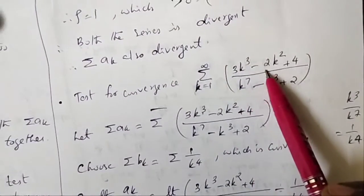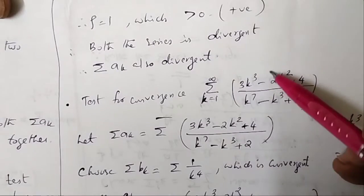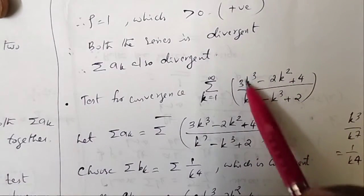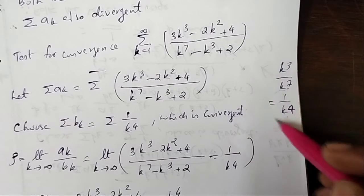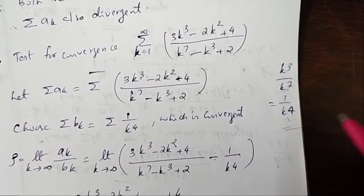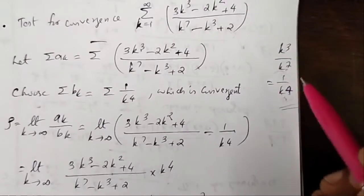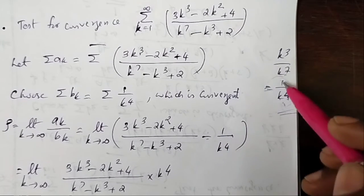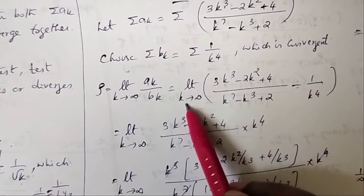Next: σ from k=1 to infinity of (3k³ - 2k² + 4)/(k⁷ - k³ + 2). Find the maximum power of k in numerator and denominator: numerator is k³, denominator is k⁷, so the dominant behavior is k³/k⁷ = 1/k⁴. Choose σbk = σ(1/k⁴), which is a convergent p-series since 4 > 1.